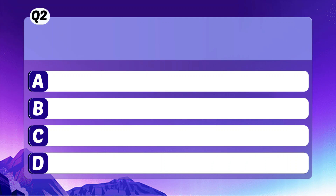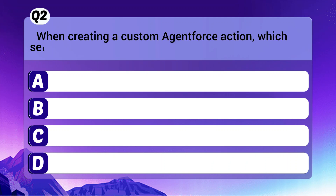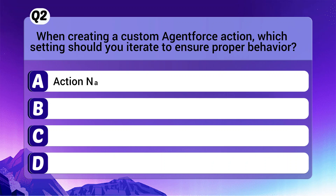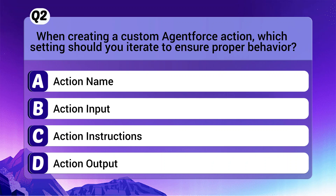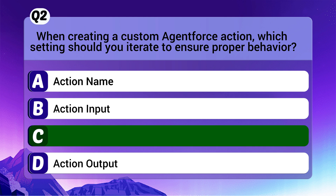Question 2: When creating a custom Agent Force action, which settings should you iterate to ensure proper behavior? The correct answer is C: Action instructions.